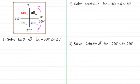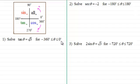Hi there. In this video I want to extend the work we've been doing on the Quadrant Rule, where I'm going to look at different ranges for our solutions. You can see we've got ranges here going from minus 360 degrees to 0 degrees, a common one of minus 180 degrees to 180 degrees, and for minus 720 to 720 degrees, this is going to have a lot of solutions.